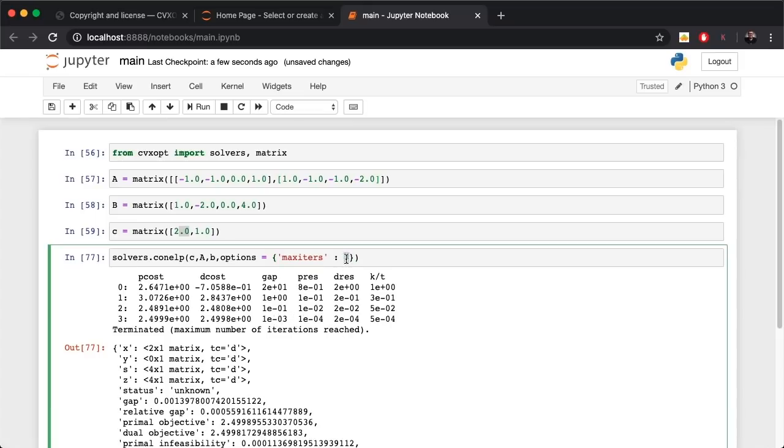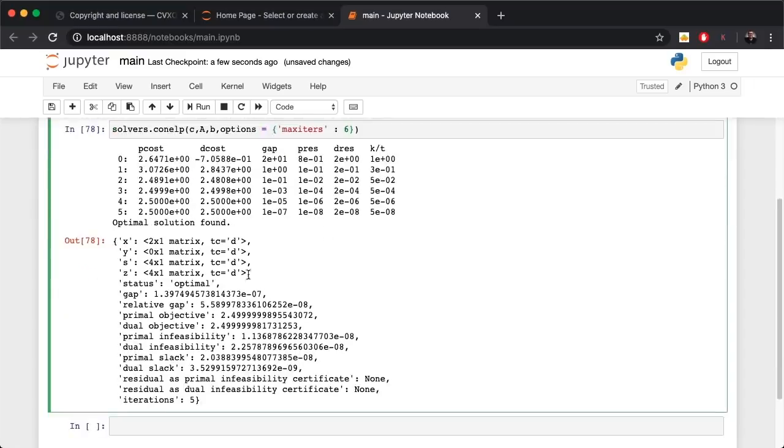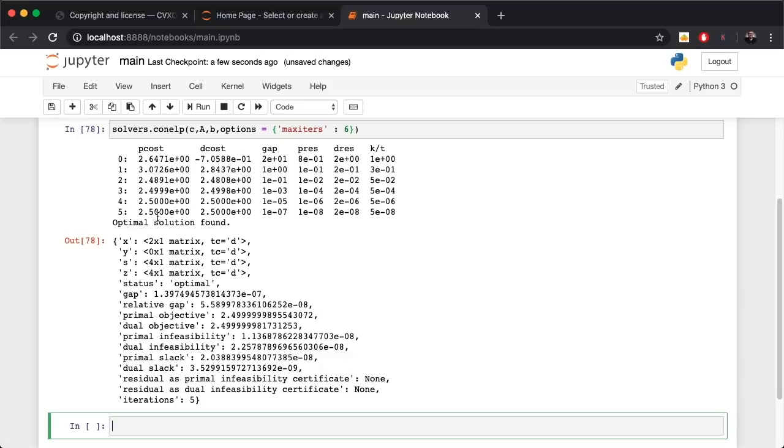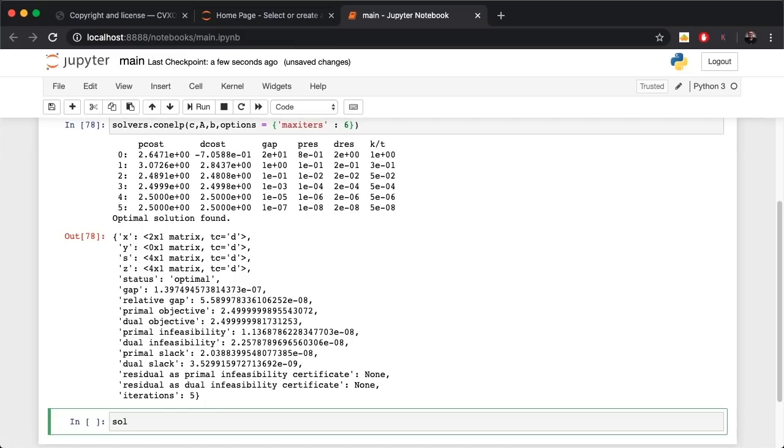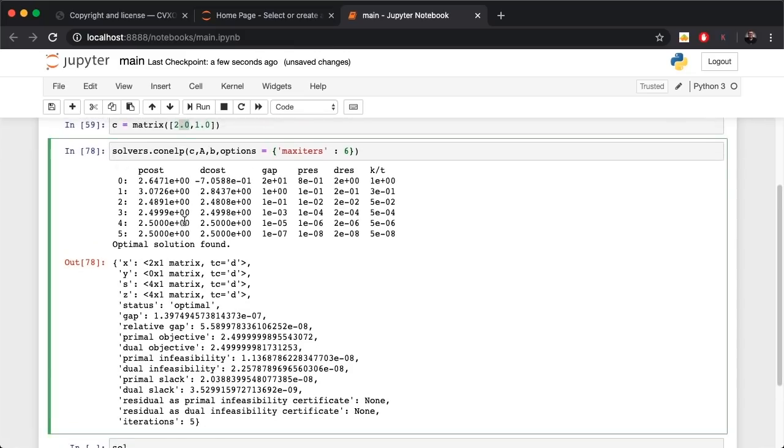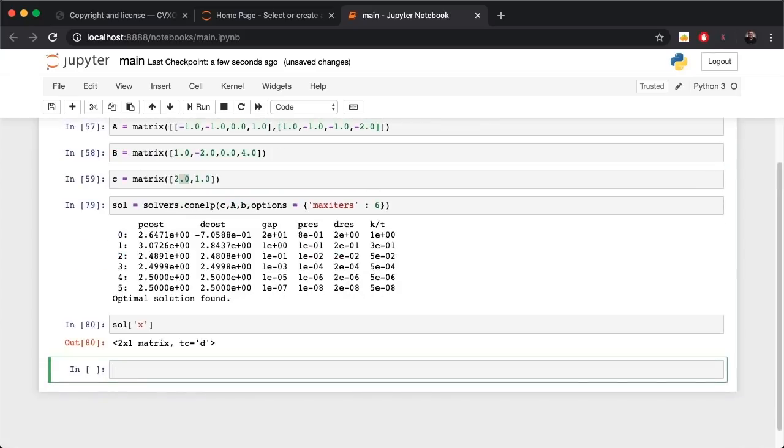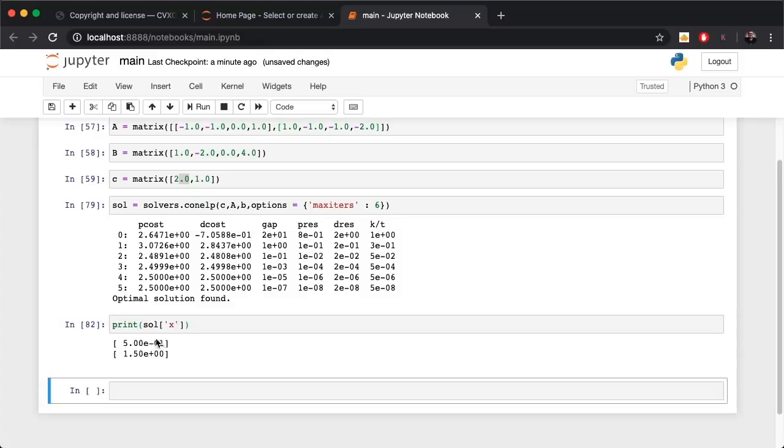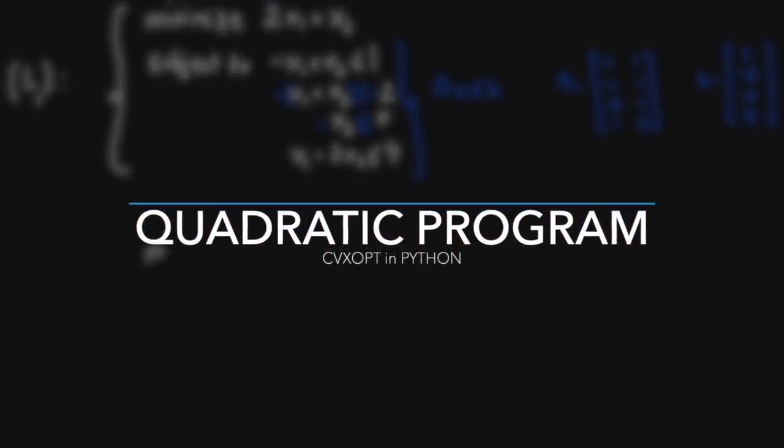Let's say I want to print the solution. Do we have it anywhere here? No I don't see it. So let's extract it. Let's save this in an object called sol as such, and from sol I'll call x, and I'll print it. There you go, this is your optimal solution.